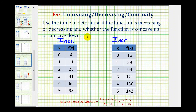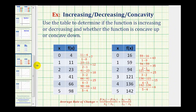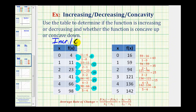Again, because this is an algebra class, we'll now find the average rates of change from x equals 0 to 1, 1 to 2, 2 to 3, 3 to 4, and 4 to 5. Here's the average rate of change for the first table. Notice how the rates of change are 7, 12, 18, 25, and 32. These values are getting larger or increasing, which means the function is concave up. So this is an increasing and concave up function.